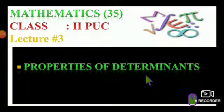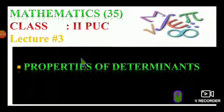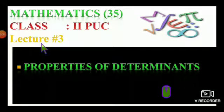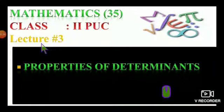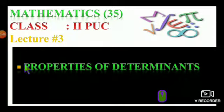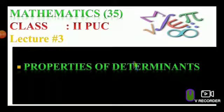In the last class we have already studied the definition of determinants, then there are some examples, notations, and also we have studied the first order, second order, and third order determinants. In this syllabus we are going to study the problems and properties of determinants of maximum third order.